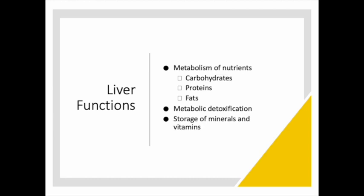The liver also has vascular and hematologic functions. Because of its extensive vascular network, it can store large volumes of blood and release blood to help maintain systemic circulation during events like hemorrhage. The liver also has hemostatic functions — it synthesizes most of our clotting factors. Vitamin K, a fat-soluble vitamin, is essential for the synthesis of these clotting factors, and because bile salts are needed for fat reabsorption, vitamin K absorption depends on adequate bile production in the liver. The liver also metabolizes carbohydrates, proteins, and fats.